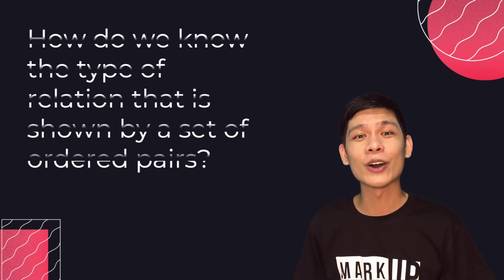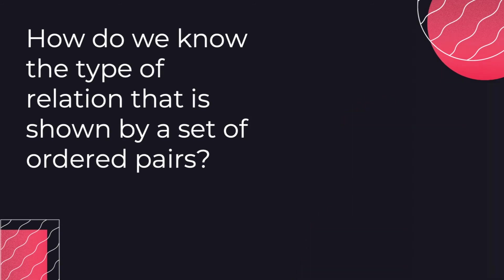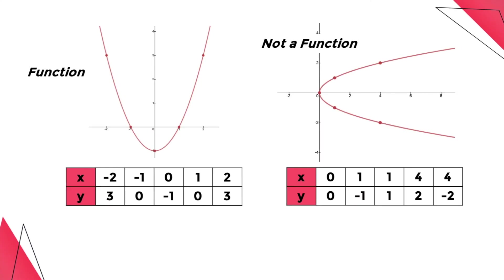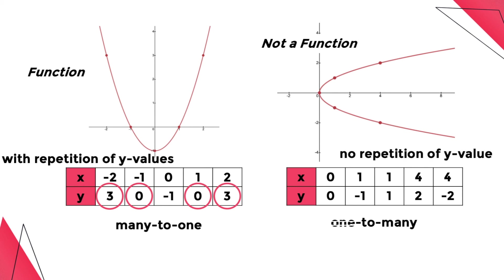Let me give you a tip on how to identify the type of relation shown by a set of ordered pairs. By analyzing the X values, we can identify if a given table of values represents a function or not. The table of values on the left represents a function since the X values are not repeated — we know it can either be many-to-one or one-to-one. Now, analyzing the Y values: since the Y values are repeated, the table on the left represents a many-to-one relation. On the other hand, for the table on the right, since there is no repetition of Y coordinates, it represents a one-to-many relation.